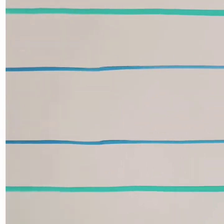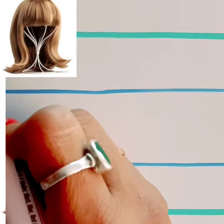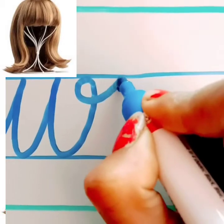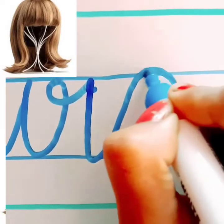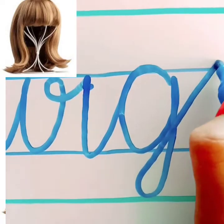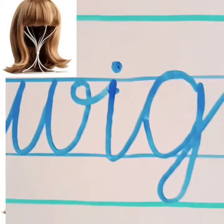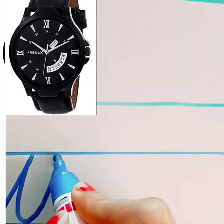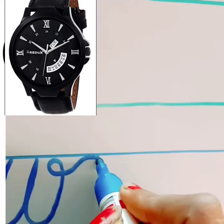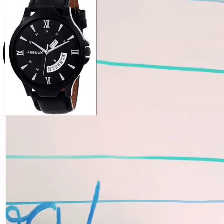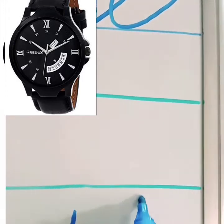W for wig. W, I, G, wig. Also W for watch. W, A, T, C, H, watch.